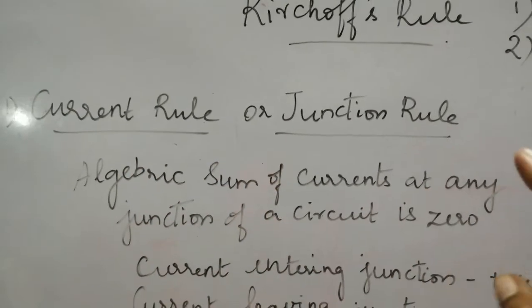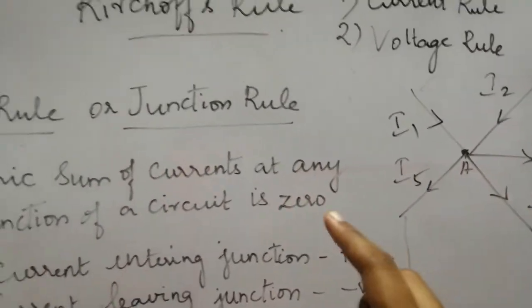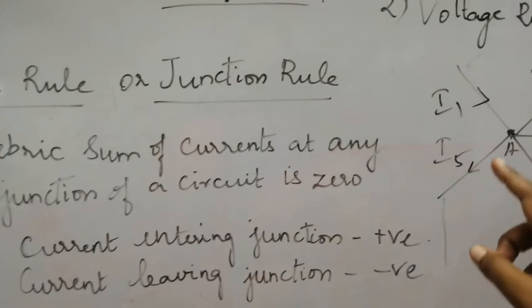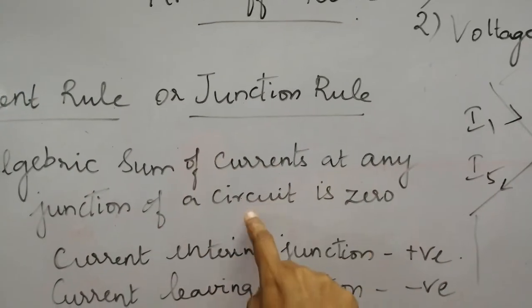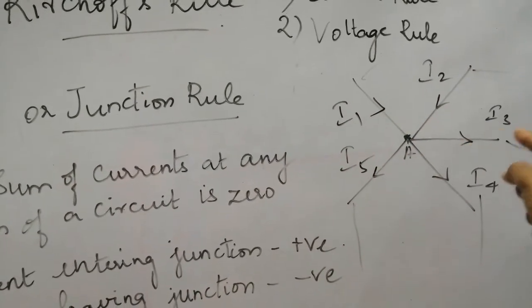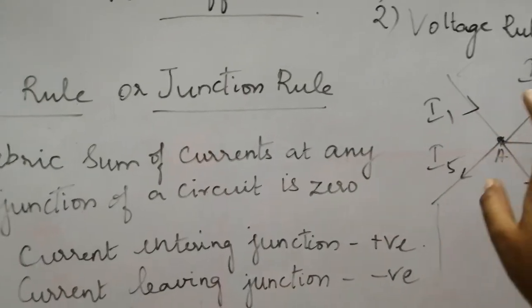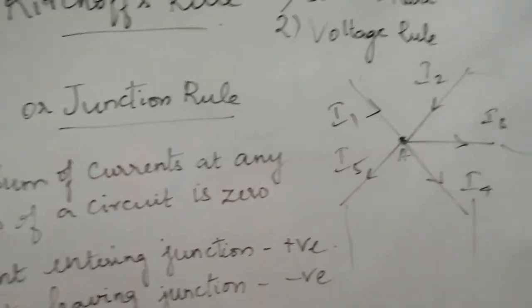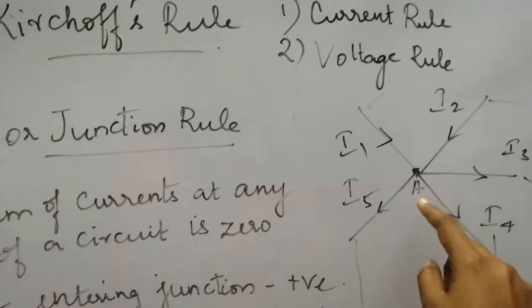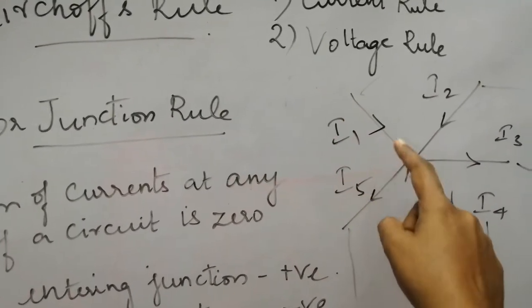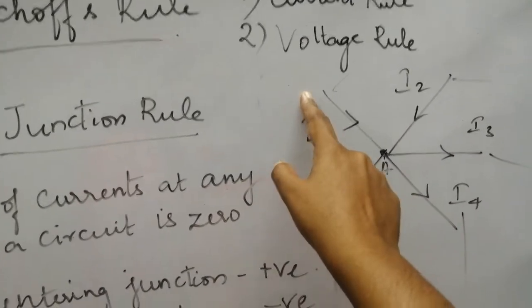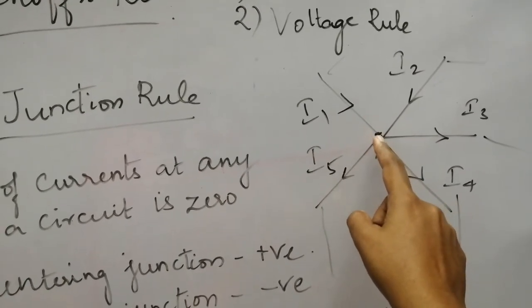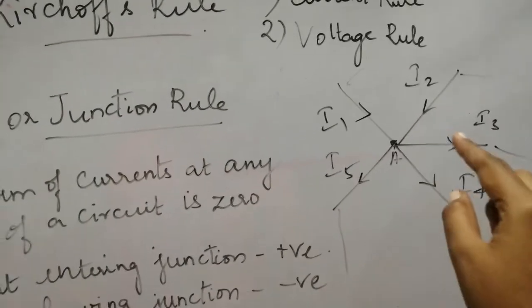According to Kirchhoff's current rule or junction rule, the algebraic sum of currents at any junction of a circuit is zero. That is, at this junction point, however many currents are flowing into the circuit, the total current value will always be zero. This means current will always enter through one way and leave the junction point through another way — it will not stay there.